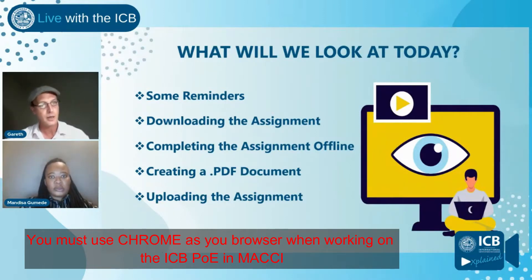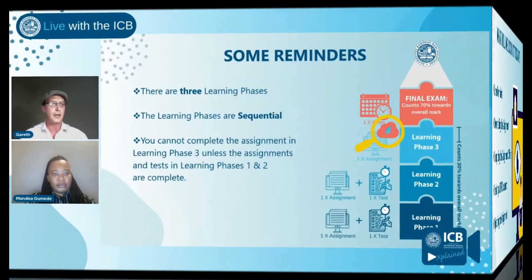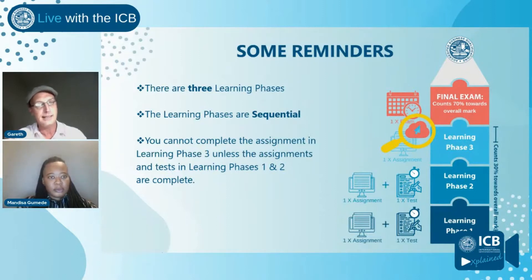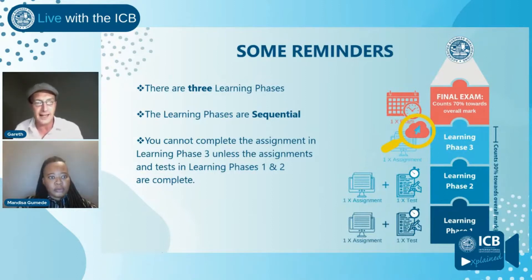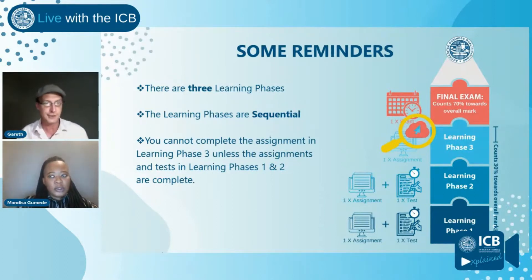First, some reminders, then we'll cover downloading the assignment, completing it offline, creating a PDF document, and finally uploading the assignment. The POE contains three learning phases and these phases are sequential. You cannot do learning phase two until you have completed learning phase one — both the assignment and the class test, which are online. Similarly, you cannot do learning phase three until you have completed learning phase two.